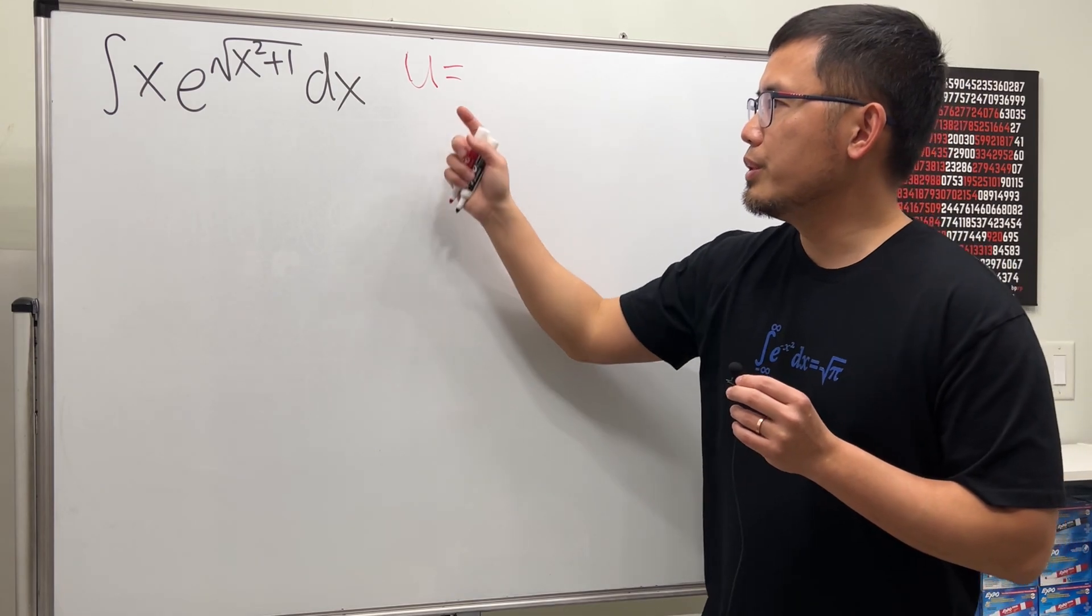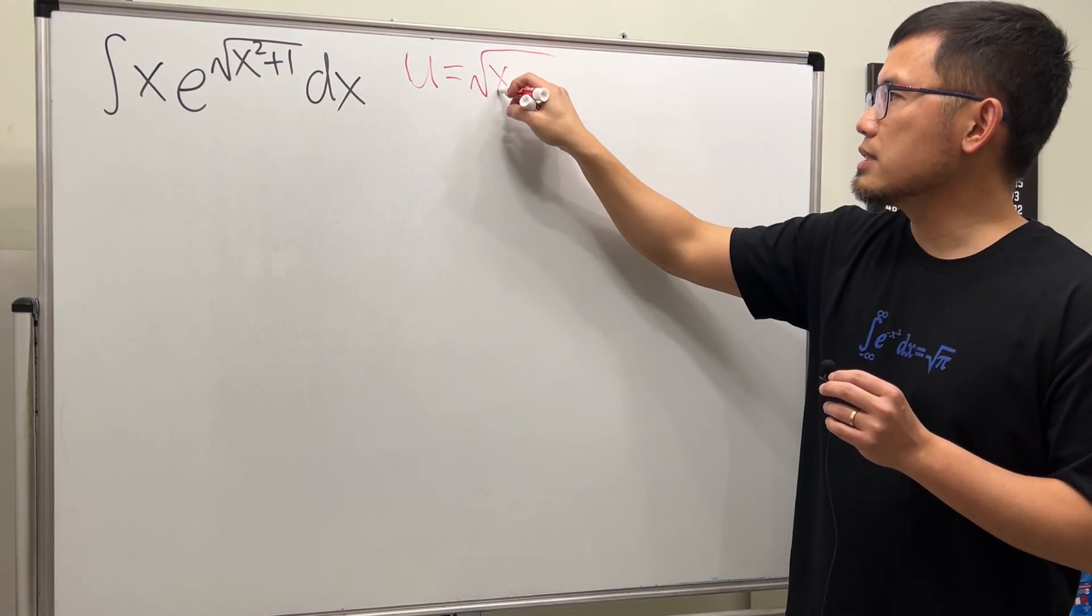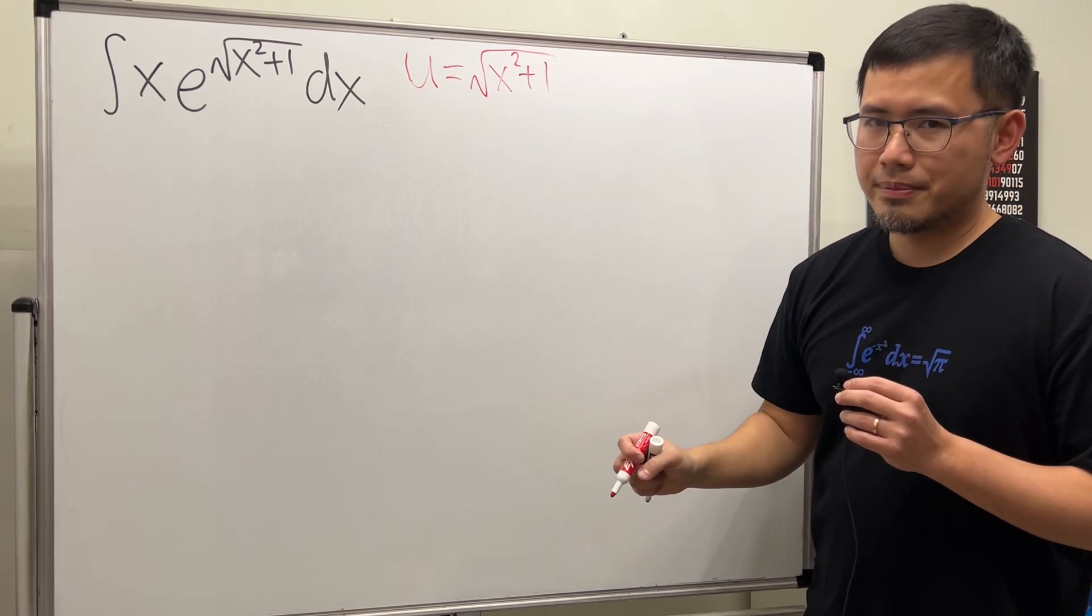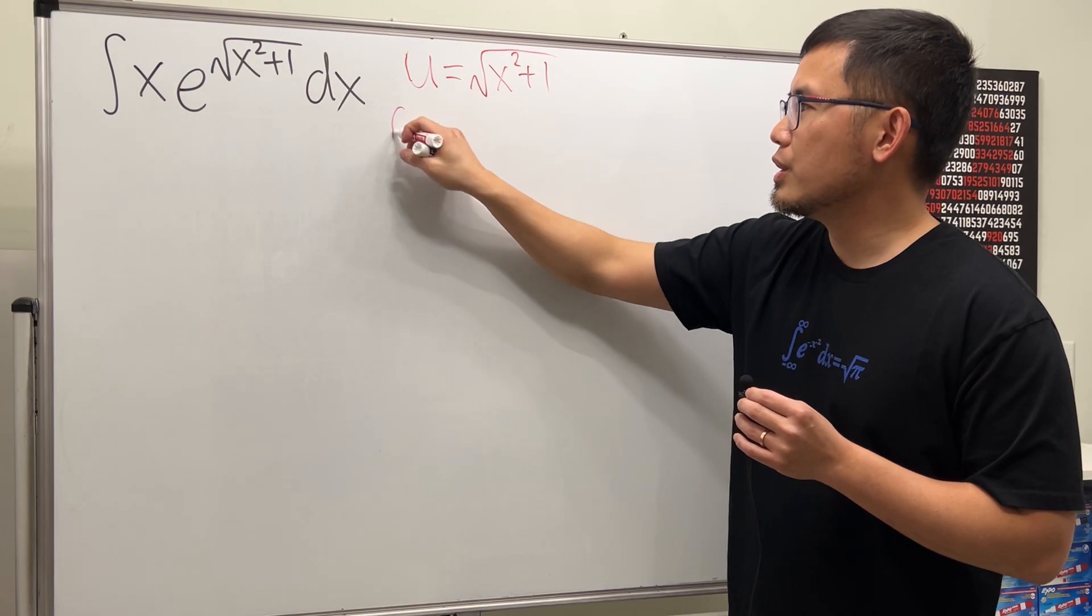So let's go ahead and try that. u equals the whole square root, so u equals the square root of x squared plus 1, and let's just proceed.